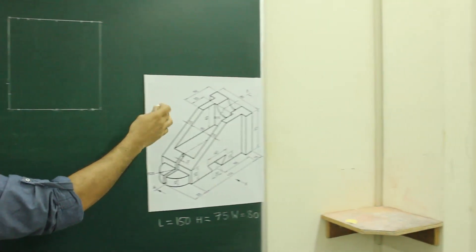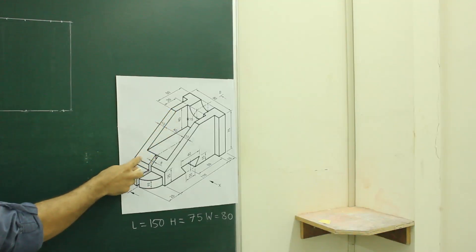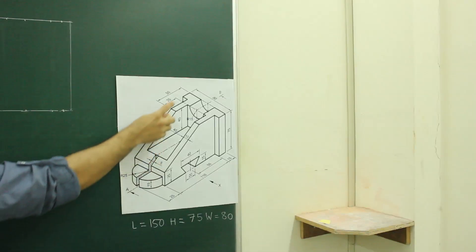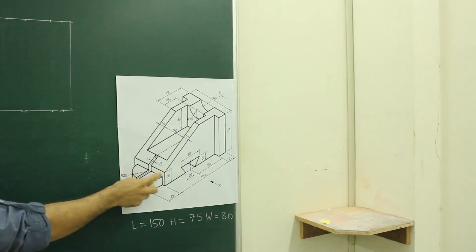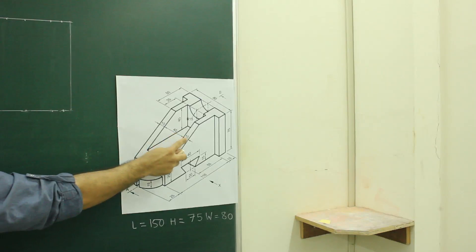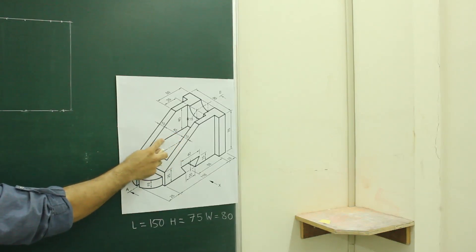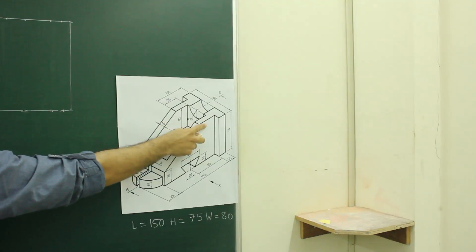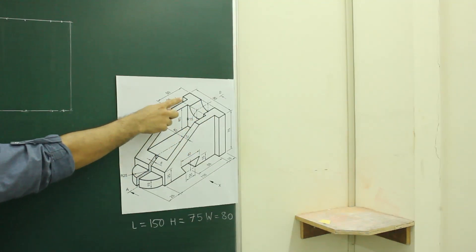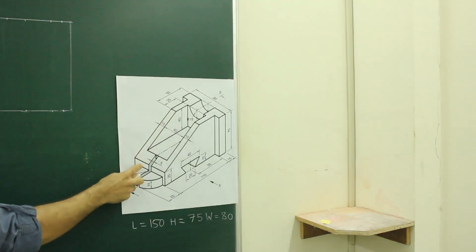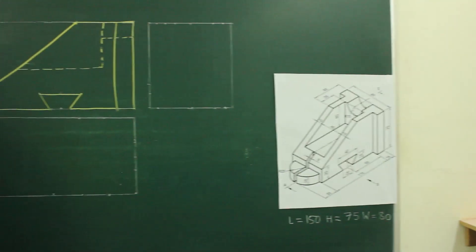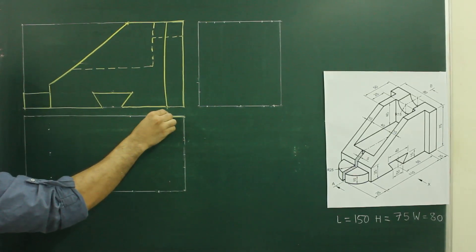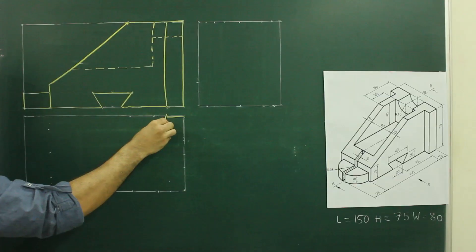When you see the main diagram from the top you'll be able to see this part, this slope, and this circle. This radius is 25, and this total is 18, so it will be 50. They have given 10, 40, 10, so that will be 60. The remaining distance would be 10 on each side. So first we will start with this part and then draw the circular part. We take 15 from here and go inside by 10.